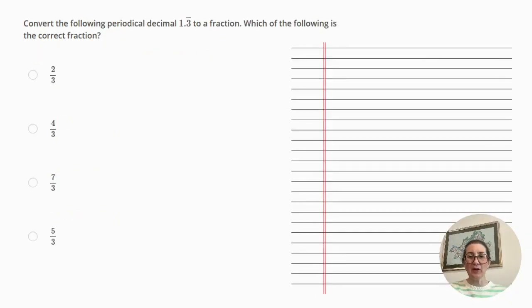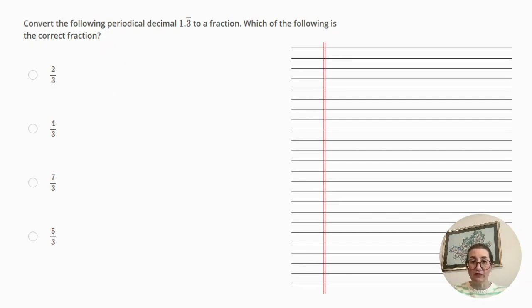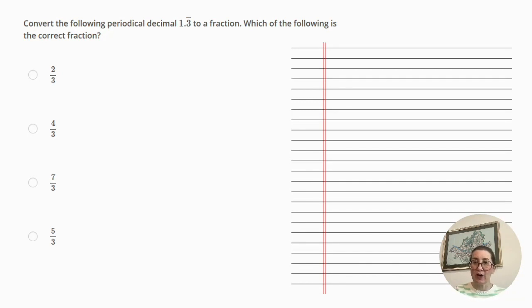Now to our second question: convert the following periodical decimal, 1.3 repeating, to a fraction. With repeating decimals, the number of decimal places is infinite, so we have to follow certain steps in order to convert it into a fraction.